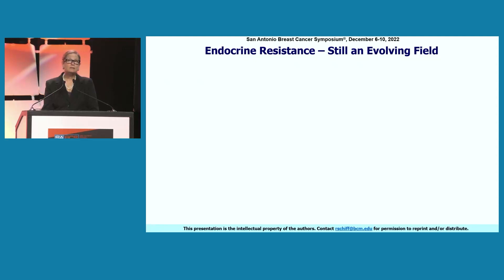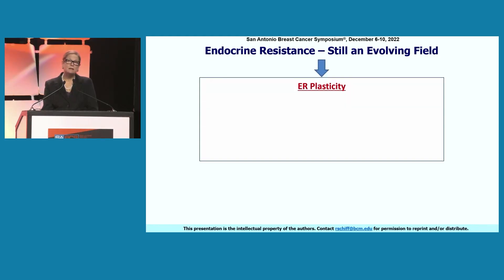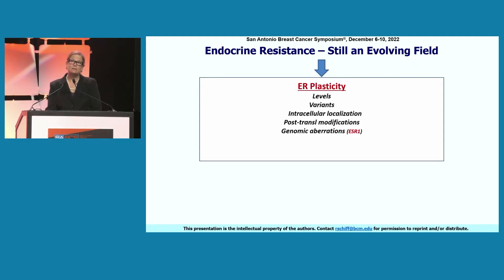I believe that endocrine resistance is still an evolving field, but an emerging theme that we have recognized many years ago and have studied for the past 20-plus years is that estrogen receptor plasticity is key for multiple different forms of endocrine resistance. Estrogen receptor plasticity consists of changes to its levels, variants, intracellular localization, post-translational modifications, and genomic aberrations to its gene.